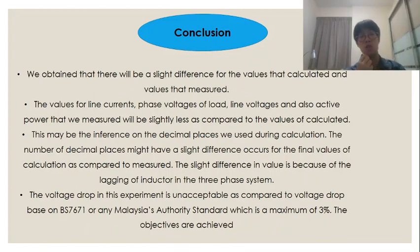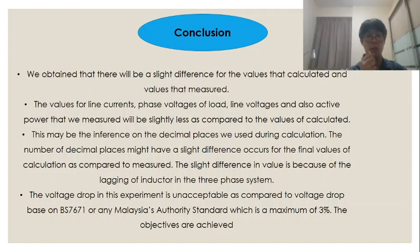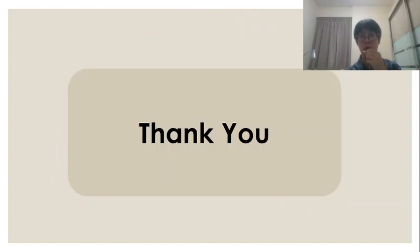For the conclusion: there will be a slight difference between the calculated and measured values. The values for line currents, phase voltages of load, line voltages, and active power measured are all slightly less than the calculated values. This may be due to rounding of decimal places used during calculation, and the slight difference is also attributed to the lagging of inductors in the three-phase system. The voltage drop in this experiment is unacceptable as compared to the standard based on BS7671 or any Malaysia authority standard, which permits a maximum of 3%. Lastly, the objectives are achieved in this project. Thank you for listening to my project sharing.